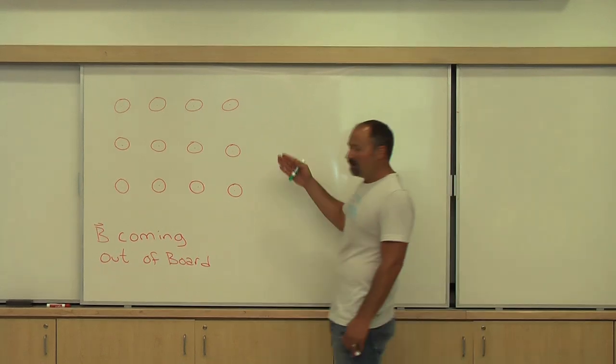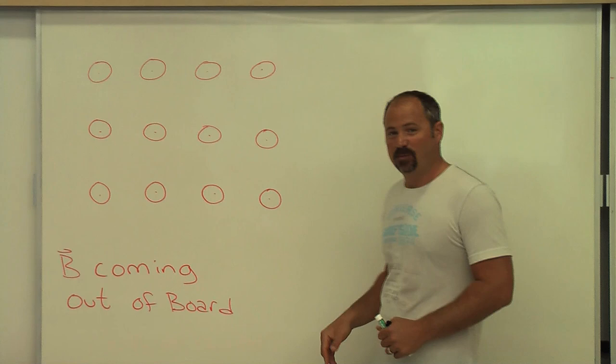Here we have on the board a magnetic field coming out of the board. How do I know it's coming out of the board? Because I've drawn a circle and a dot, which signifies the tip of the arrow coming at you.